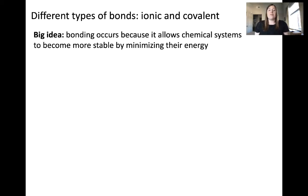Let's first focus on distinguishing between different types of bonding, whether the bonding in the compound is ionic or covalent. Why bonding occurs within chemical compounds is a big idea within the field of chemistry. The reason that bonding occurs is because it allows chemical systems to become more stable by minimizing their energy.